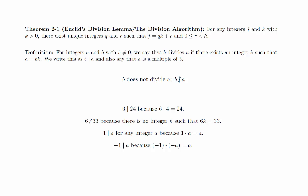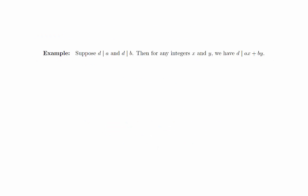To help become more familiar with the definition, we will do a quick example proof. Suppose d divides a and d divides b. Then for any integers x and y, we have d divides ax plus by. The proof is simply a matter of applying the definition and doing a little bit of algebra. Since d divides both a and b, there are integers j and k such that a equals d times j, and b equals d times k. If we then substitute these into ax plus by, we find that we can write it as d times an integer. If d divides both a and b,